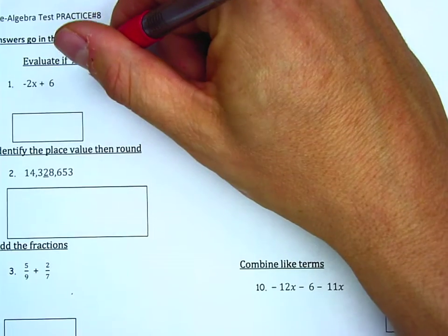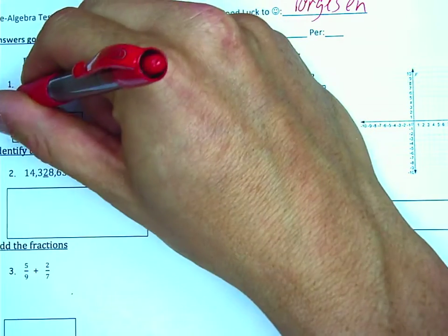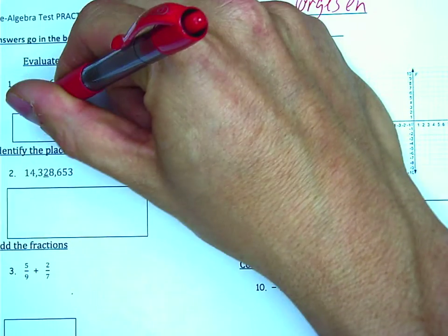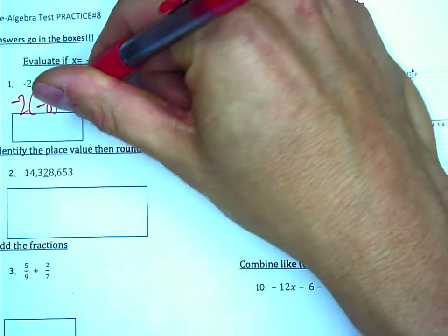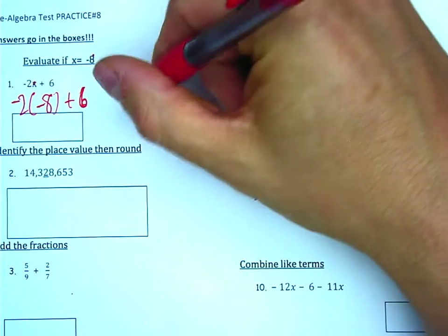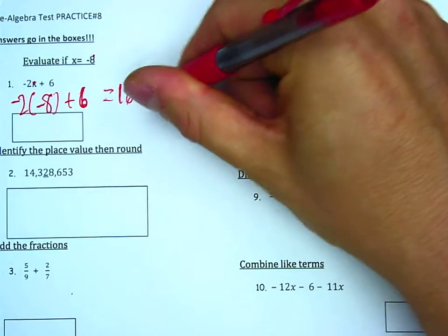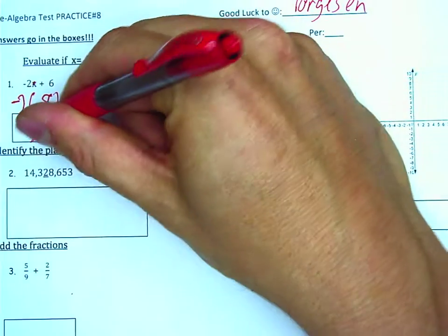Question 1. When x equals negative 8, we replace x with negative 8. This becomes negative 2 times by negative 8 plus 6. A negative times a negative is a positive, so this will be equal to 16 plus 6 will equal 22 as our finished answer.